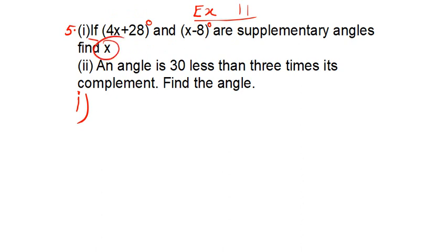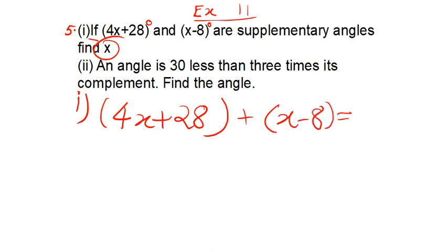You can write here, in brackets, 4x plus 28 plus x minus 8 is equal to sum of supplementary angles. And what is the sum of supplementary angles? 180 degrees. Now we will open the brackets, so we will have 4x plus 28 and plus x minus 8 is equal to 180 degrees.